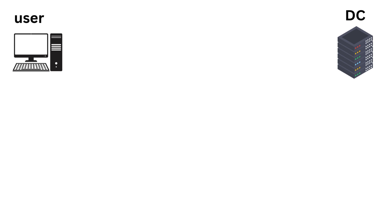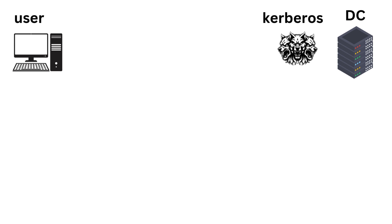Here we have a user on the left side and a DC on the right side. The user tries to log into the domain and enters their password, which is going to be sent to the DC as an NTLM hash. A part of the DC runs a protocol called Kerberos, which is responsible for authentication and authorization of users in the domain. It has a component called the KDC — Key Distribution Center — which is responsible for creating TGTs and keys.